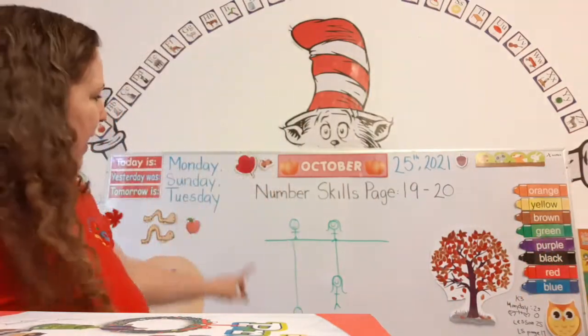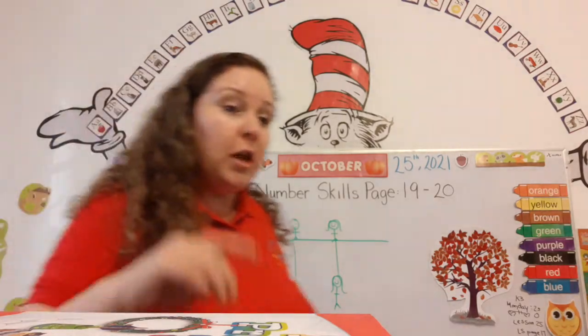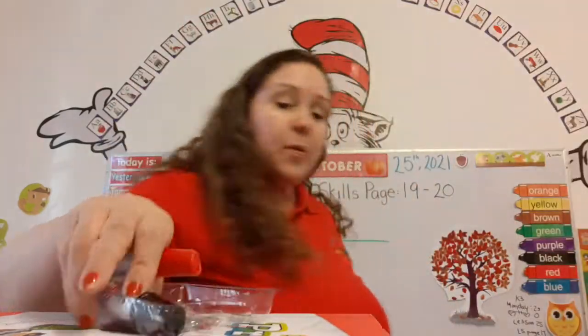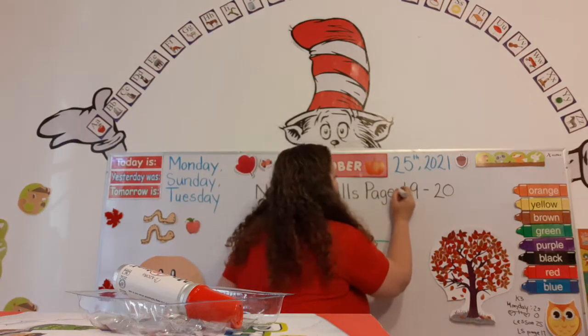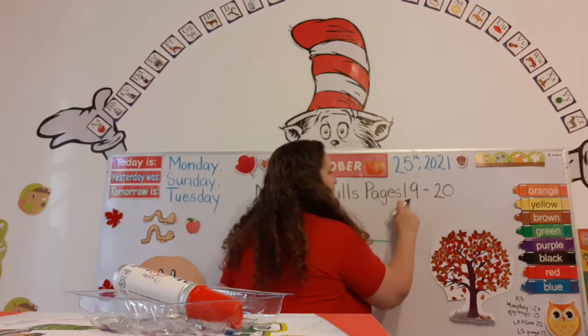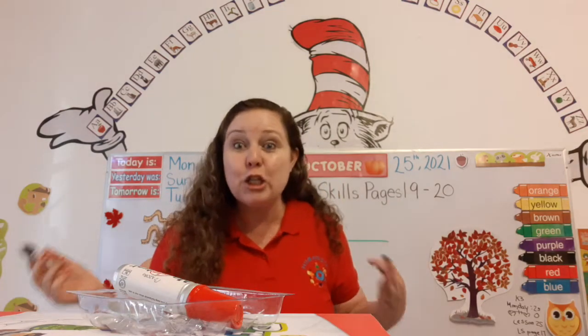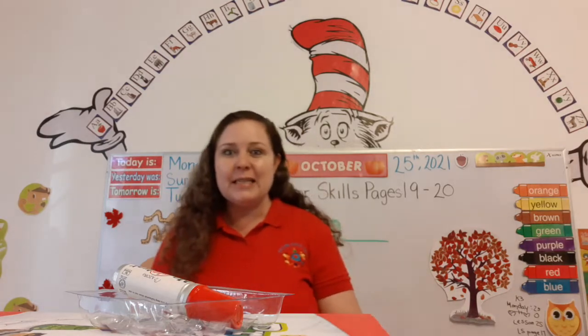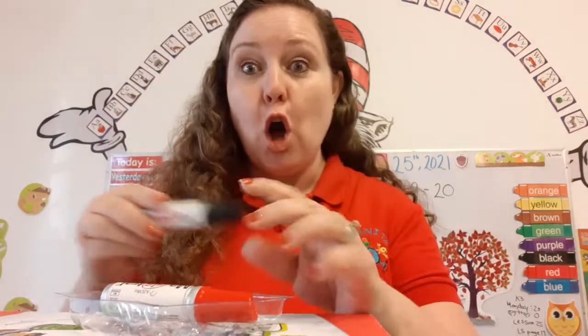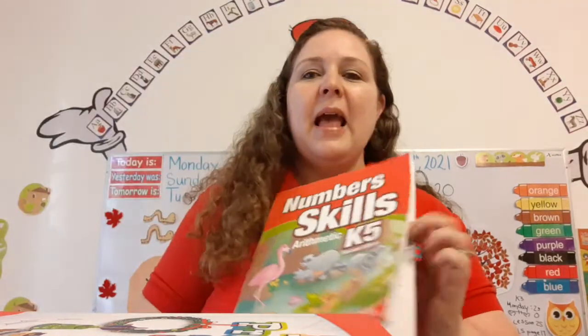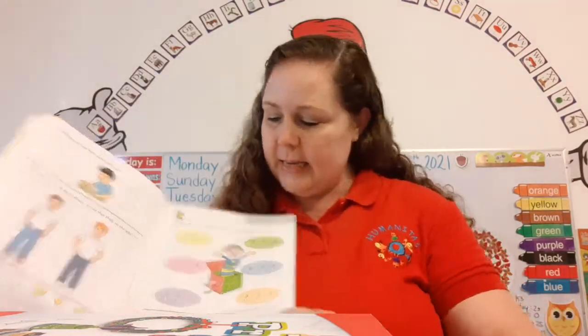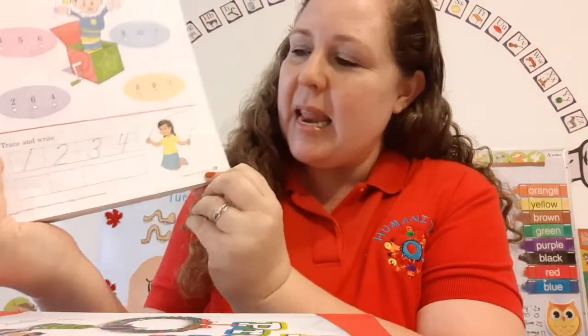Now, number skills. We're learning about adding the letter S. Remember that if it's more than one, we're going to put an S. So, there are two pages, so we need to say pages — that's called plural, more than one. We're going to get our number skills workbook out and open it to page 19: one ten and nine ones.